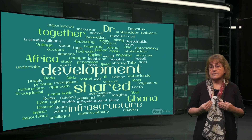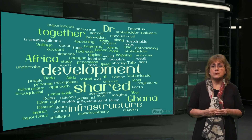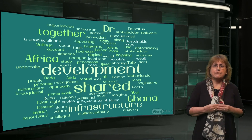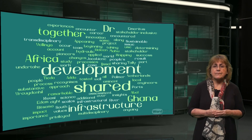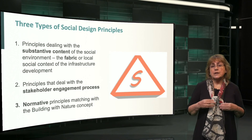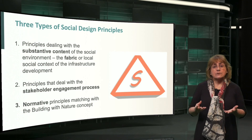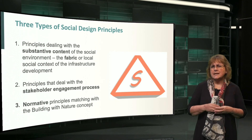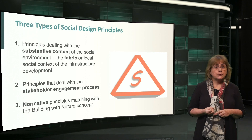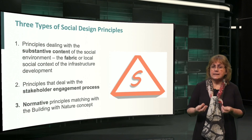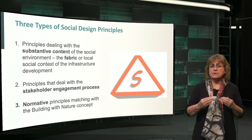I will be sharing additional social design principles tested together with a team of scientists from the Netherlands and Ghana in a sustainable ports in Africa project. These scientists include Prof. Kwasi Apenning-Addo and Dr. Edem Mahu on the Ghana case study, and Dr. Helene Vroogtenhill on the issue of scales and innovation. We can distinguish three kinds of social design principles: the principles dealing with substantive content of the social environment, the principles dealing with the stakeholder engagement process, and the normative principles matching the Building with Nature concept.